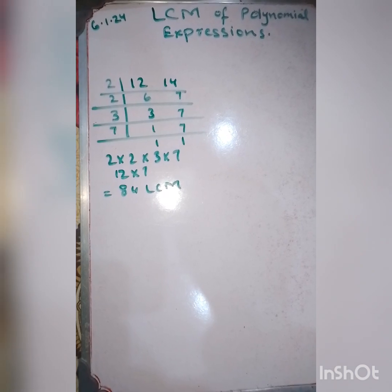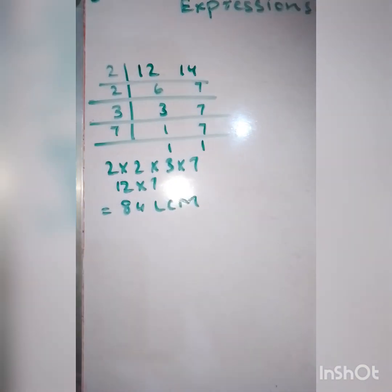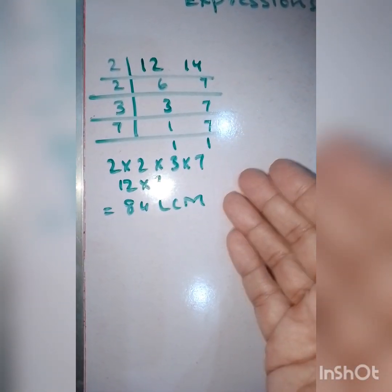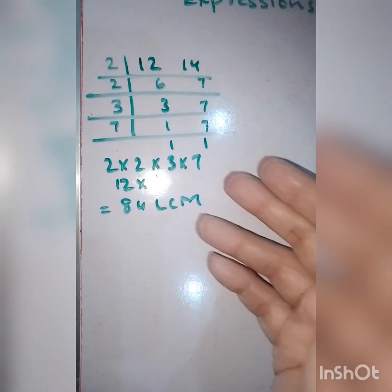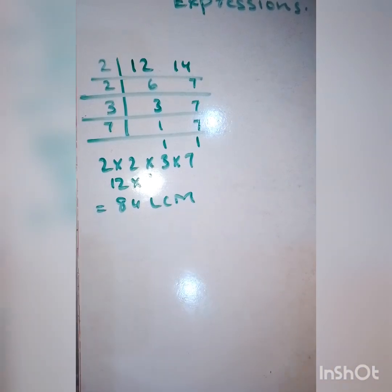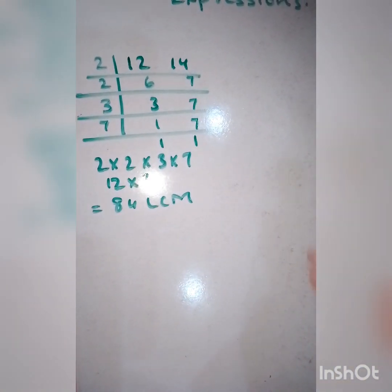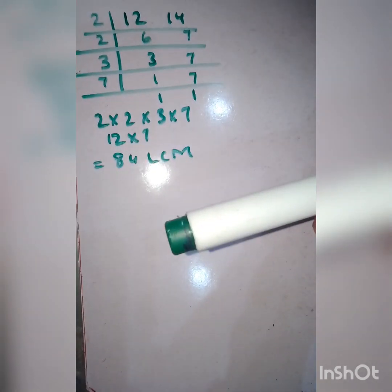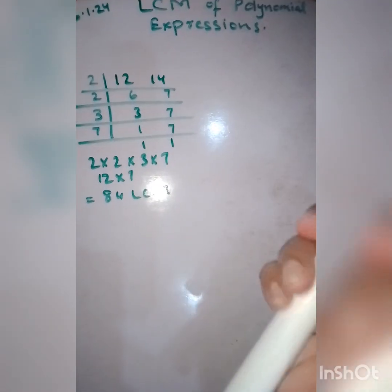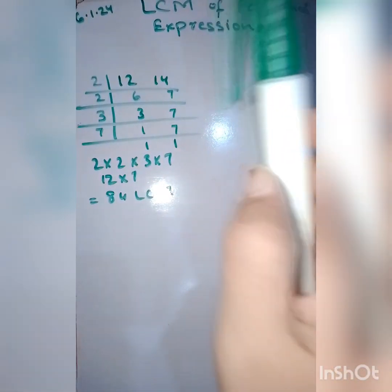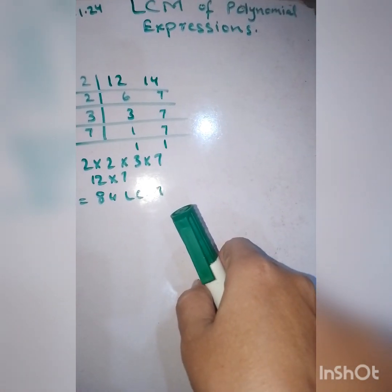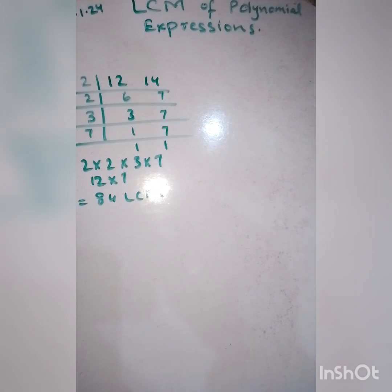You are already familiar with the least common multiple from previous grades. This is the simplest method for finding the LCM of numbers. You know this is a grade form where prime numbers are utilized, and then we multiply to find the product and get the answer. In today's lesson, we are going to solve the LCM using polynomial expressions. Let's see how.